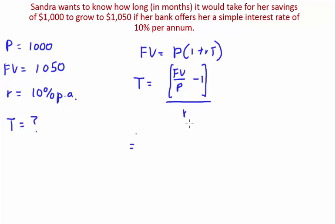Now all that's left is to put it in. So you got 1050 on 1000 minus one. And you need to have a bracket in for this in your calculator. So all this needs to be bracketed up. And then you put your 10%.